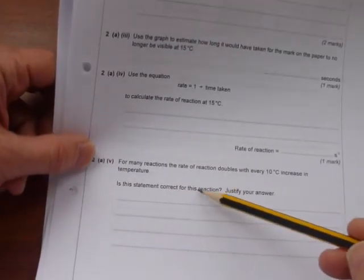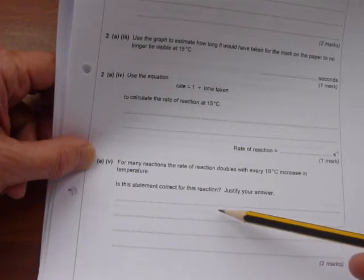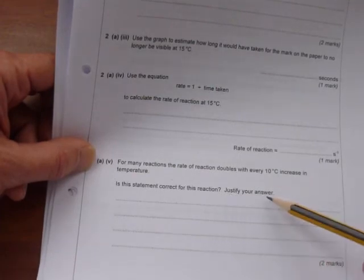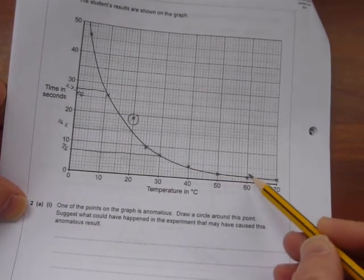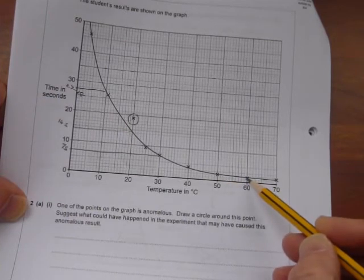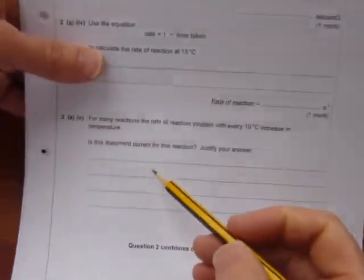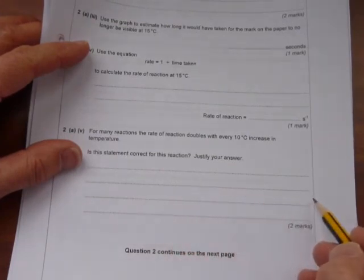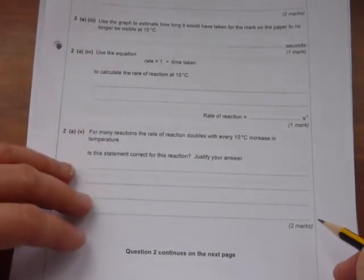Is this statement correct for this reaction? Justify your answer. Yes, it is. Going from ten degrees to twenty degrees, the time halved, so the rate doubles. Going from twenty to thirty degrees, the time halved, so the rate doubles. Justify your answer. You've justified it. However, you could answer, no it's not, because from between fifty and sixty degrees, the rate has hardly changed. You haven't halved the time taken. From sixty to seventy, again, the rate has hardly changed. So either you can answer yes and give your data to justify it, or you could say no, it's not true at higher temperatures. There are two possible answers to this, and so long as you use the results to justify your answer, you can score full marks.